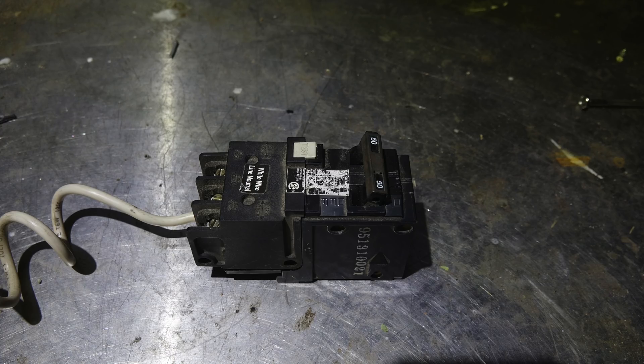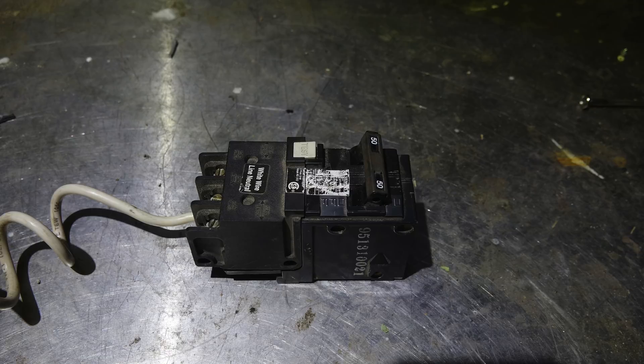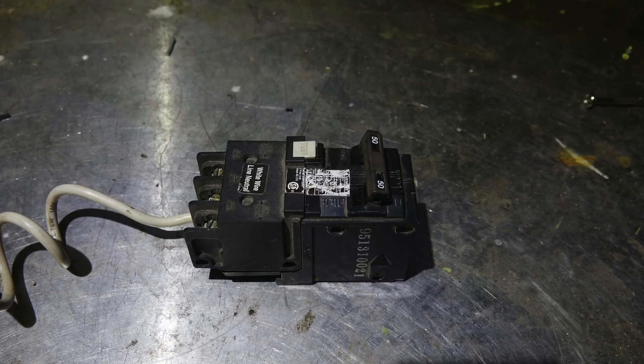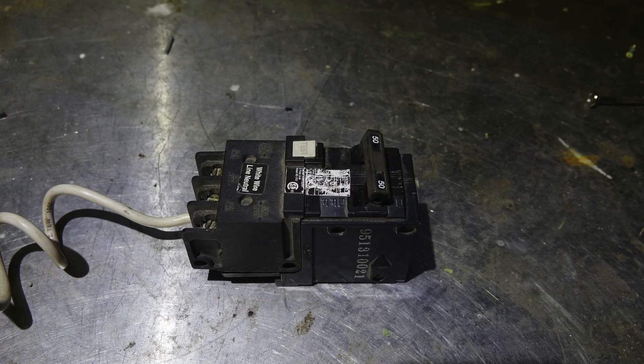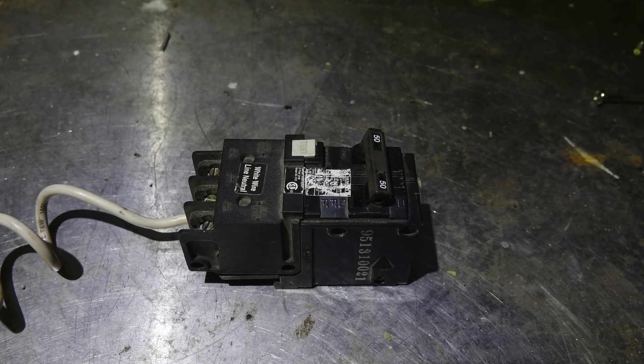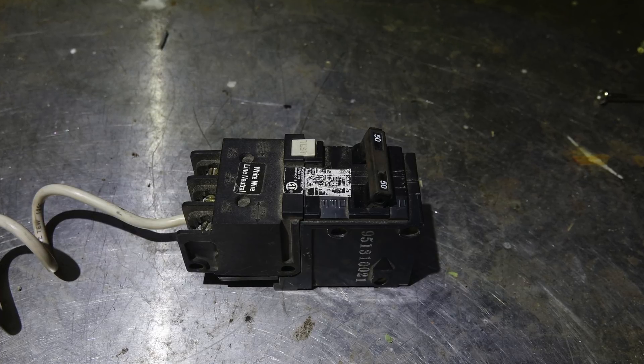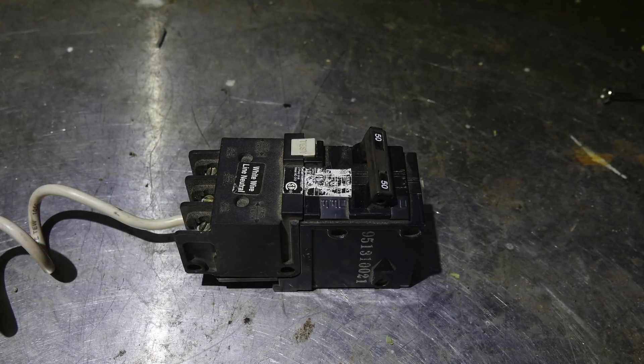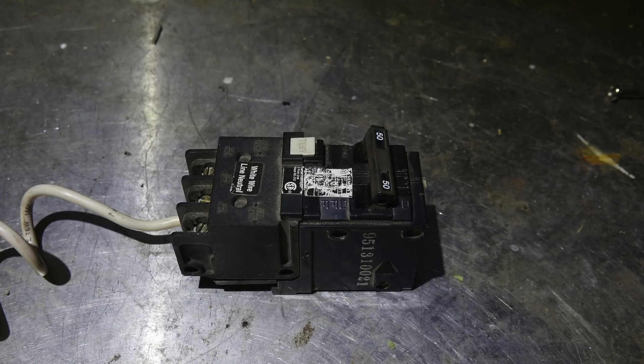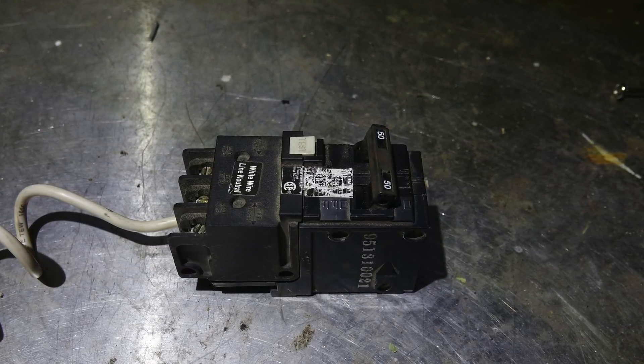This one is about the ground fault interrupter. This is a breaker type, it's a double breaker 50 amp. I'm going to show how these things work inside. This one is actually a 220 volt ground fault interrupter.